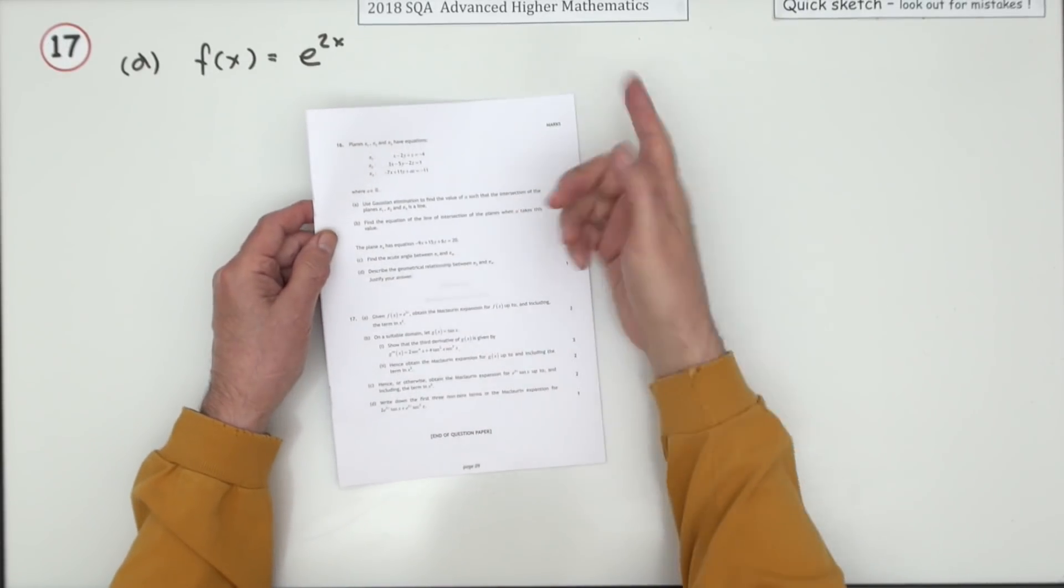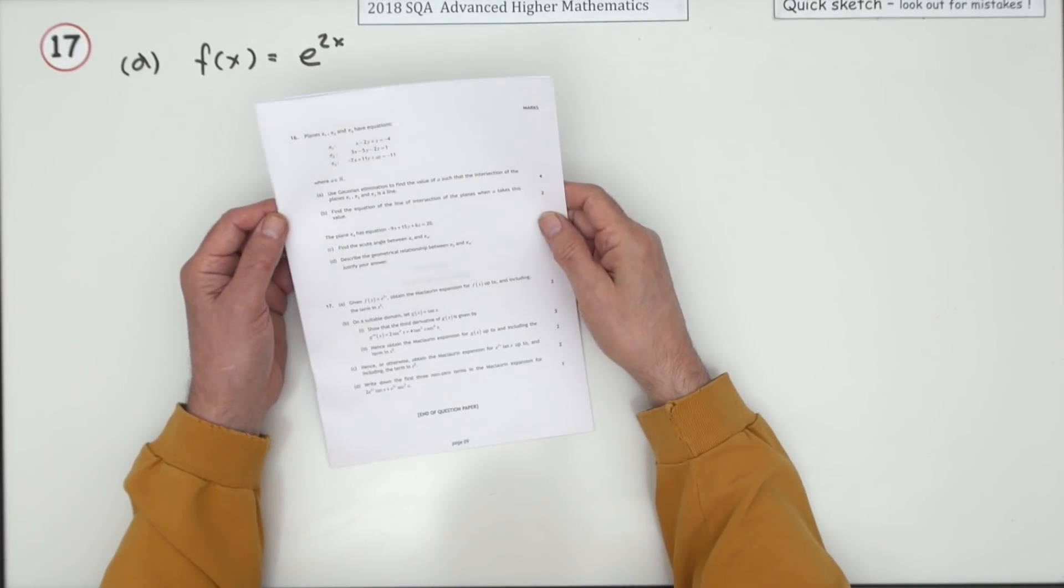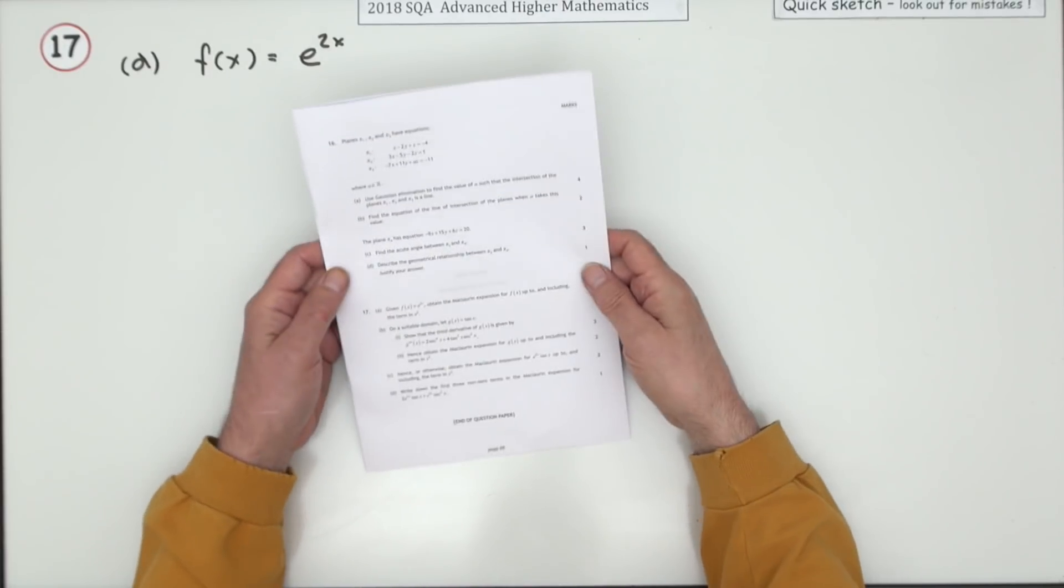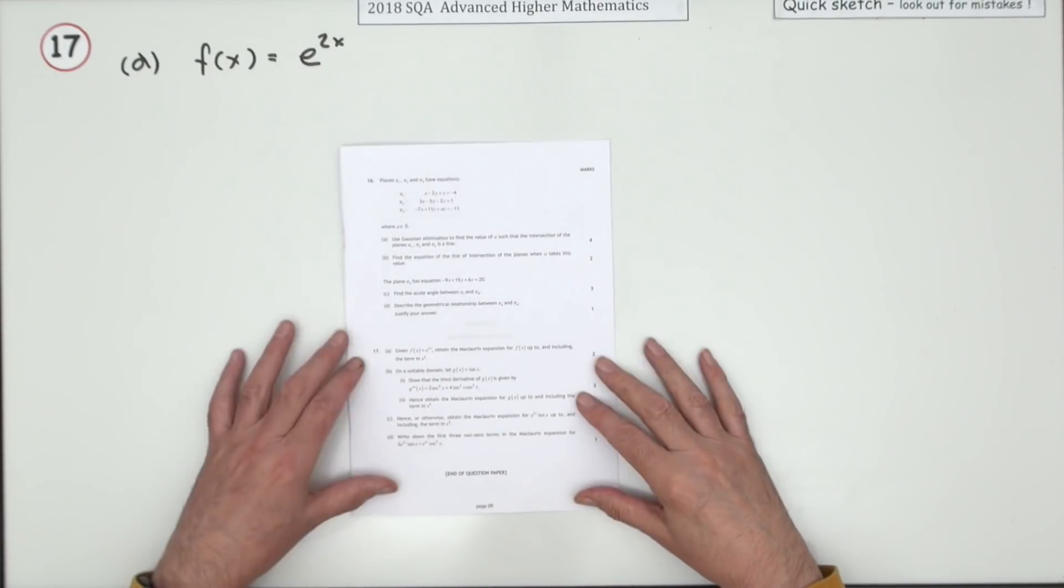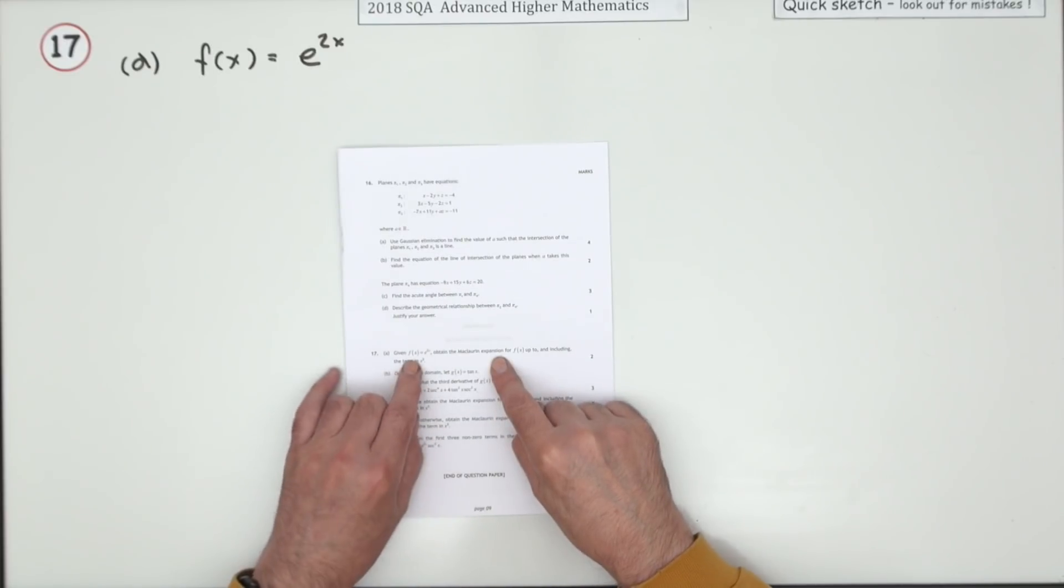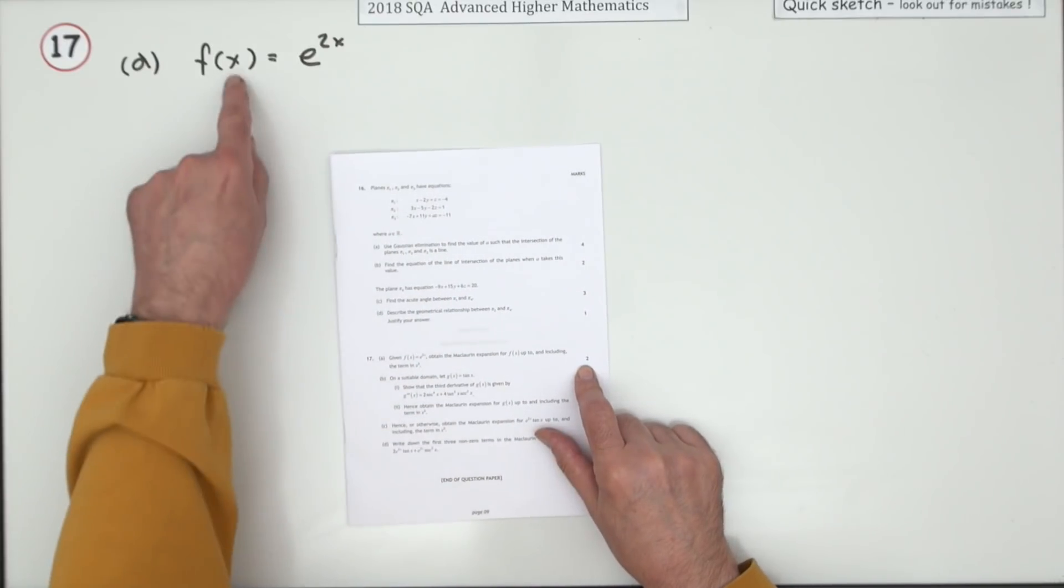So number 17 then, which is the last question in the 2018 Advanced Higher Maths 10 mark question, broken into little bits and pieces. It's all McLaurin's expansion here, kicking off for two marks with this.